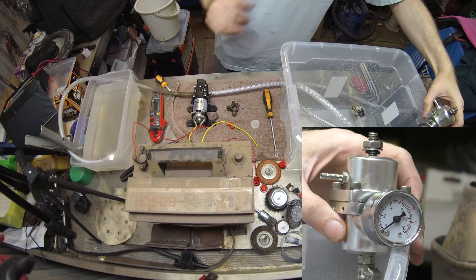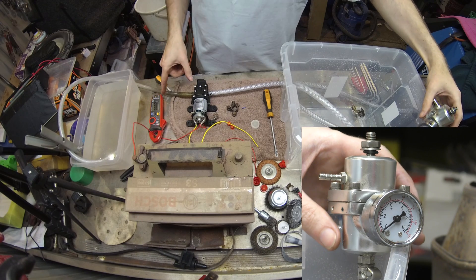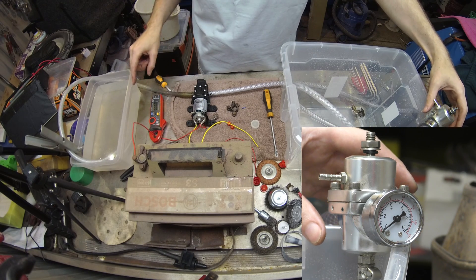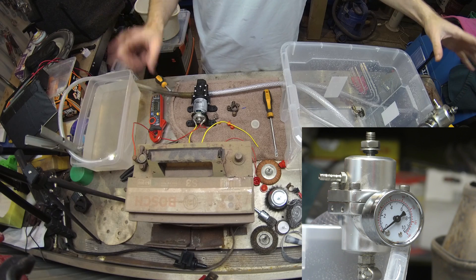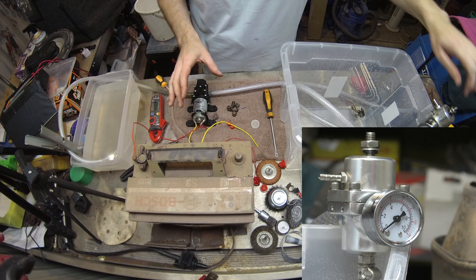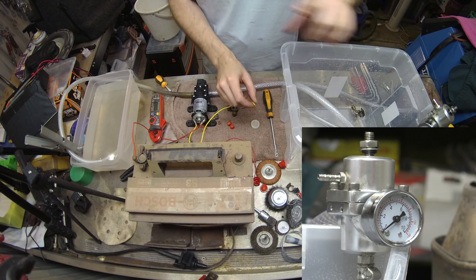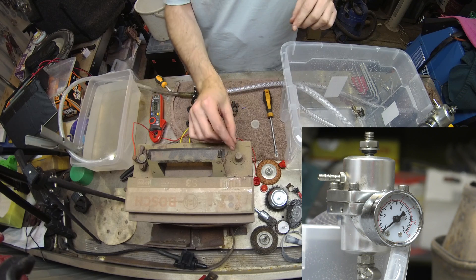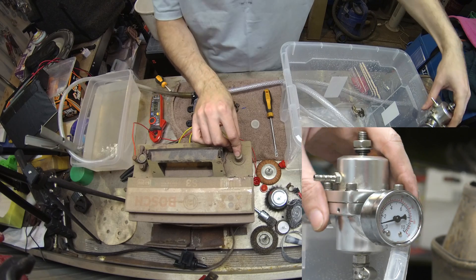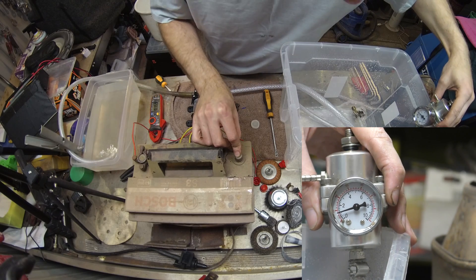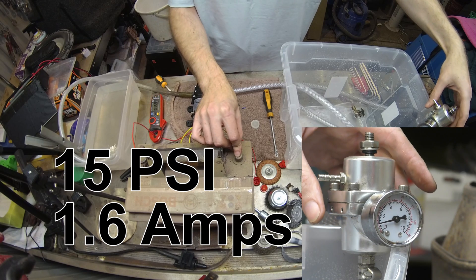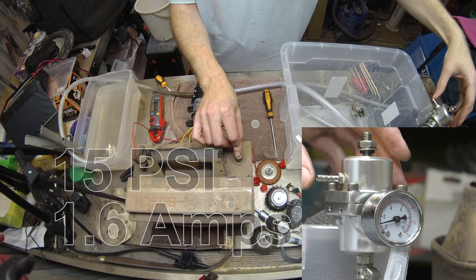One moment please! So, clamp meter, zero out, DC amps, 12-volt battery power supply, no pressure on the regulator, so it's essentially just pumping straight through. That's like 15 psi and 1.6 amps.